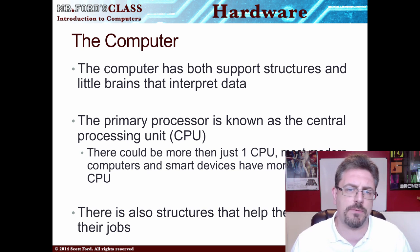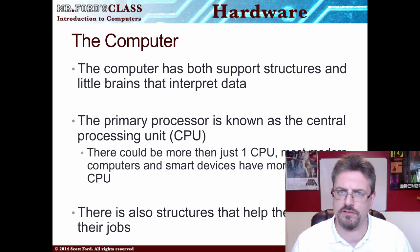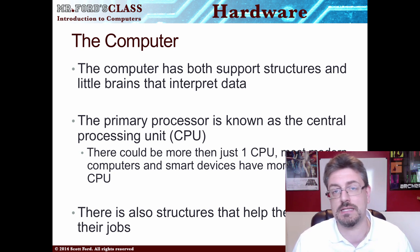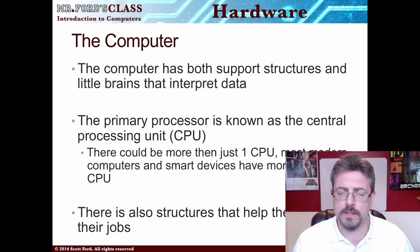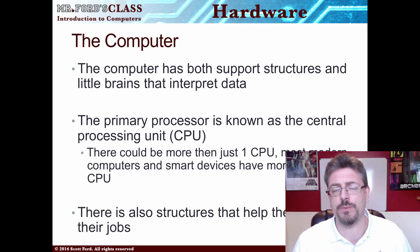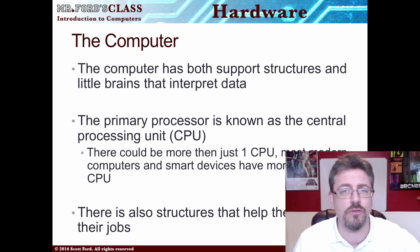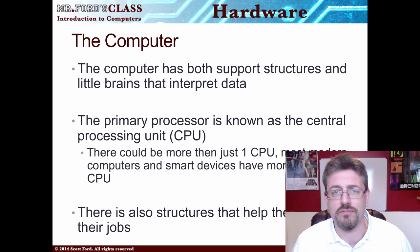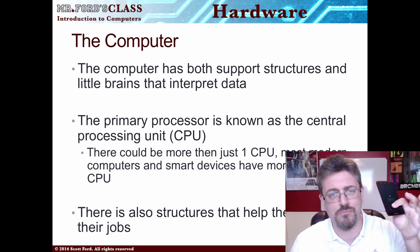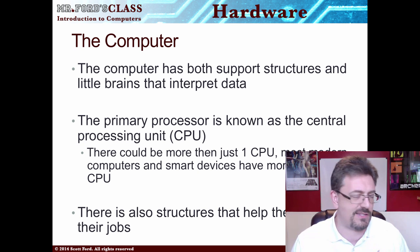The computer has both support structures and little brains that interpret data. The primary processor is known as the CPU, or central processing unit. This is the brain of the computer. In the old days you would have one CPU, but as technology progressed we sped up the CPU, made it more efficient and effective. Now we live in the wonderful days of multiprocessors — we actually have more than one CPU in our devices. Even our smartphones have more than one CPU working in there.